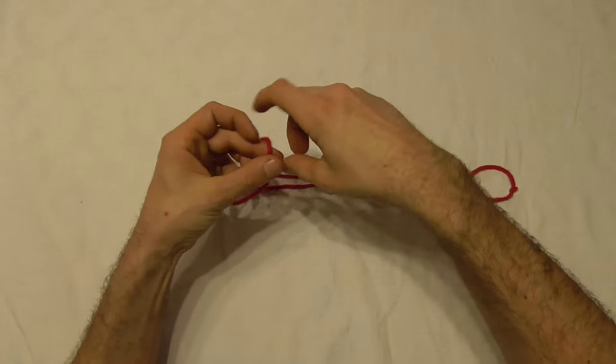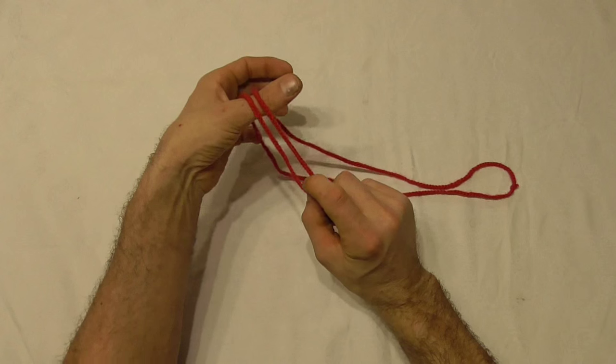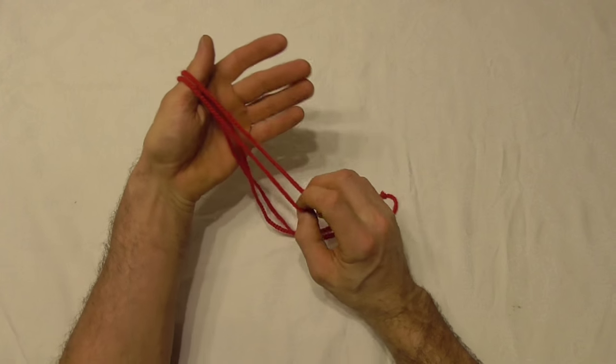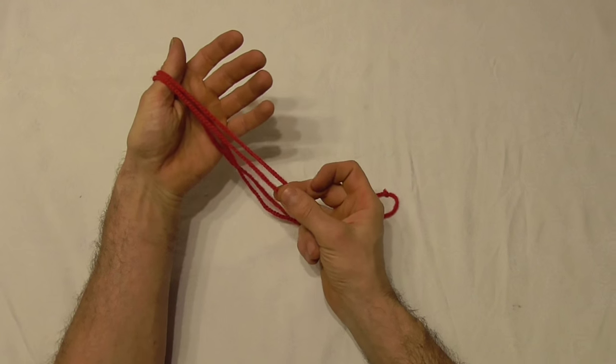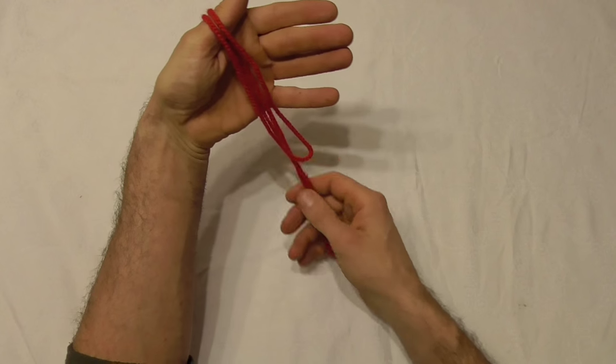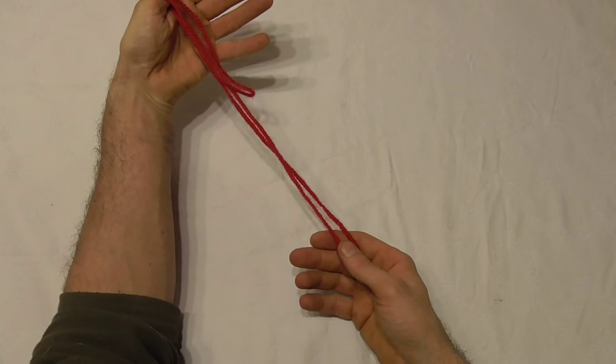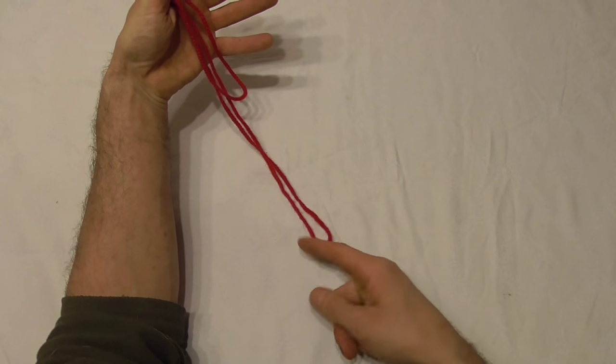our loop of string and drape it over our thumb from behind, so the small part of our loop is on the front side and the longer part of the loop is on the backside of our thumb.